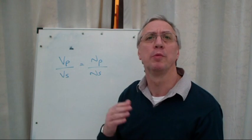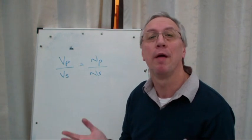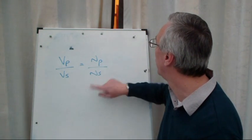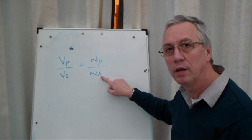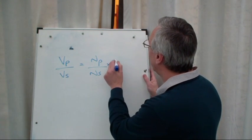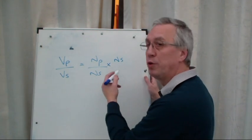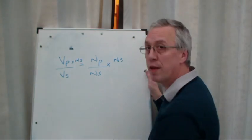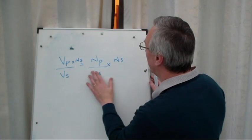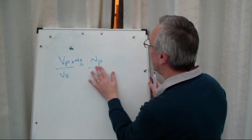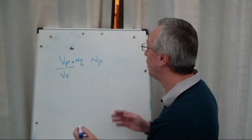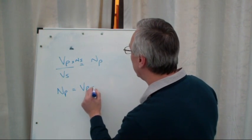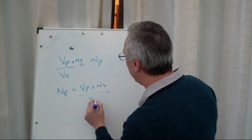Whatever we do to one side of the formula, we must do to the other side to keep the balance. How can I eliminate NS? I need to get NP on its own. This is a division here, so let's do a multiplication. Let's multiply that side by NS. What we do to one side, we must do the same to the other. We multiply that side by NS. NS now cancels out, and we're left with NP on its own. Put it on the left. NP equals VP times NS over VS.